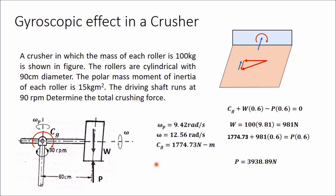Here you can see that if there is no gyroscopic effect, the crushing force would equal the weight, which is 981 newton. But because of this gyroscopic effect, the crushing force has increased from 981 newton to 3938.89 newton, which is almost four times the actual crushing force. In this way, gyroscopic effect can be utilized usefully. Thank you for watching this video.